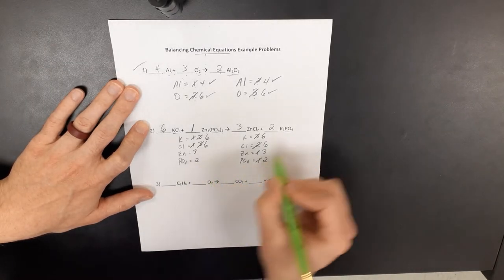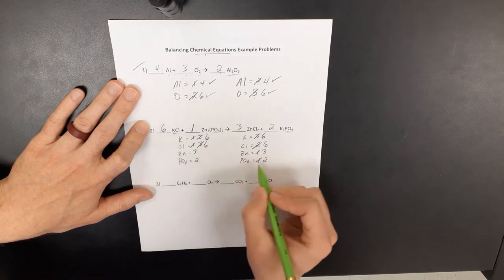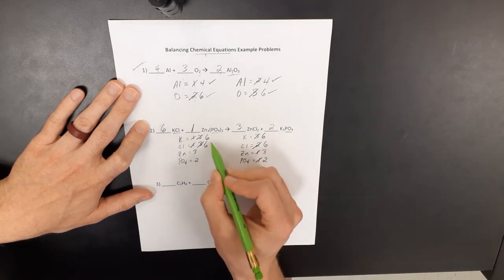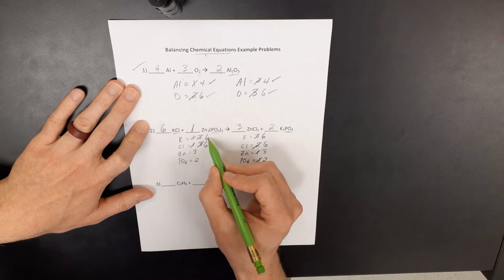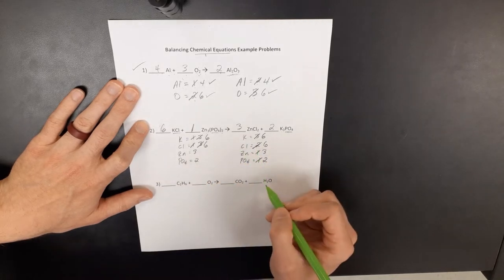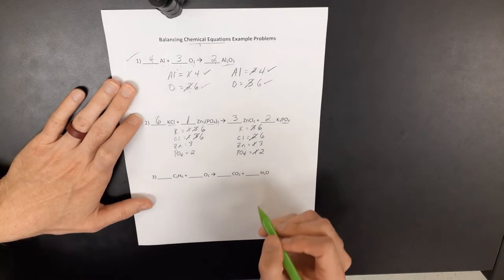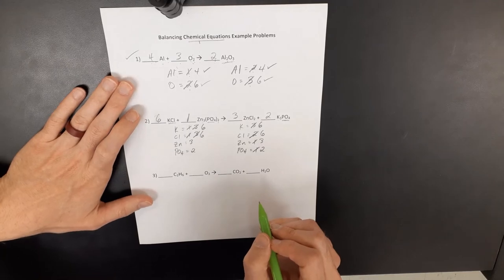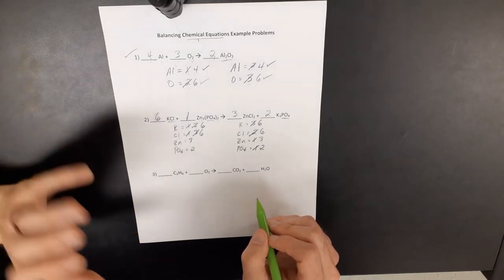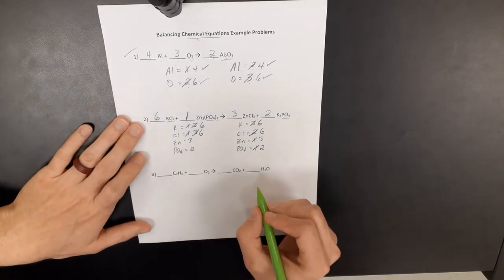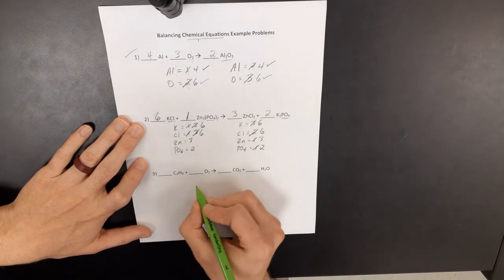You know, had we started with the phosphate, you know, we could have maybe made this a little bit easier on ourself and not have to come up here and do a couple of times to fix the potassium. But a lot of times, you know, it's just kind of trial and error. You start with one thing, you fix it, you might have to go back and fix it again later. So let's come down here to this third one.